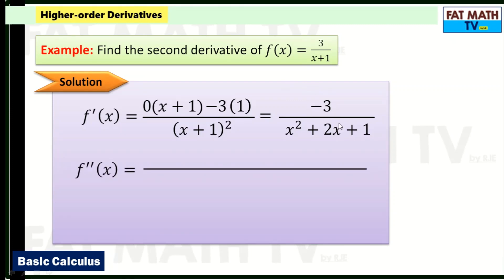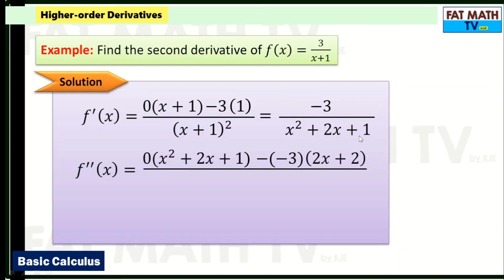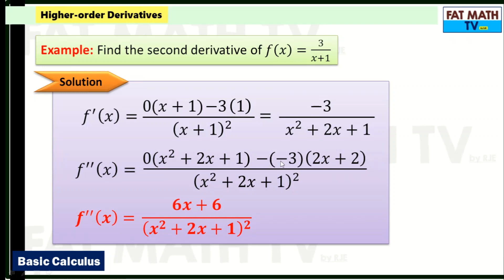For the second derivative with numerator -3 and denominator x² + 2x + 1: derivative of -3 is 0, times the denominator, minus (-3) times the derivative of the denominator (2x + 2), over the square of the denominator. Simplifying: positive 3 distributed gives 6x + 6, over (x² + 2x + 1)². In this lesson your skills in finding derivatives are enhanced through repeated application of the differentiation rules.